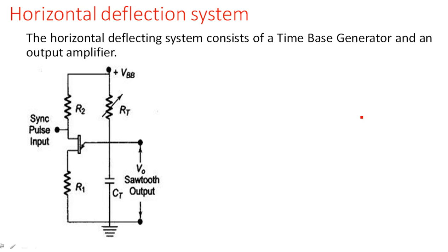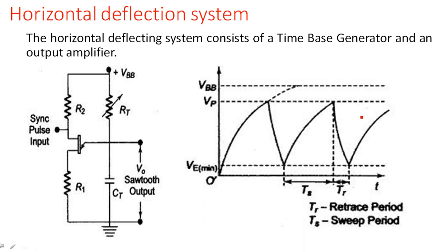Next is the horizontal reflection system. In the horizontal reflection system, we have a UJT relaxation oscillator, also called a time base generator. This produces a sawtooth waveform. The UJT — uni-junction transistor — has a single junction with one emitter and two bases: base one and base two. The synchronization input is applied here, which changes the state of the transistor.